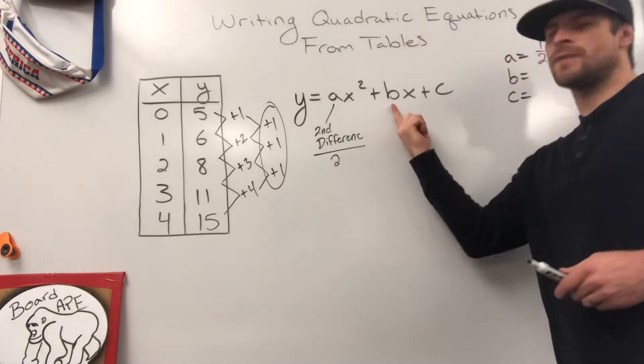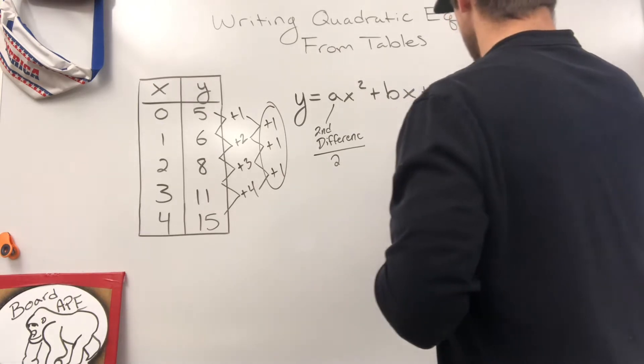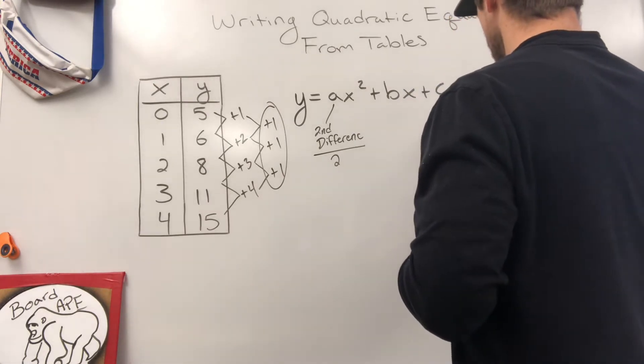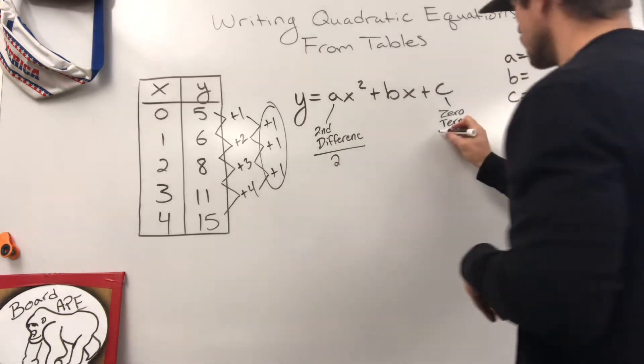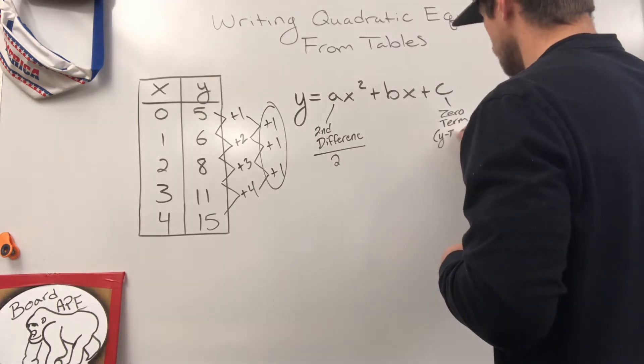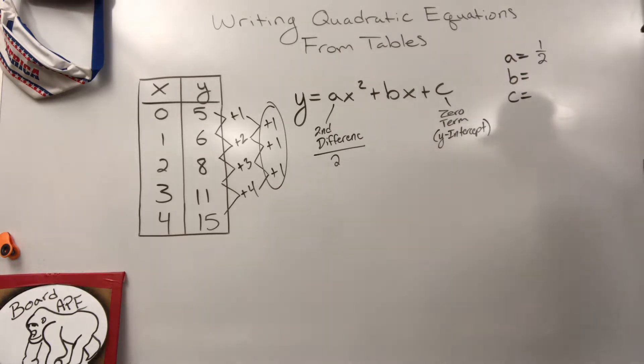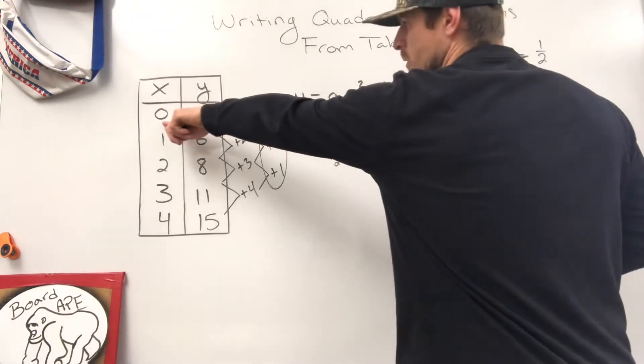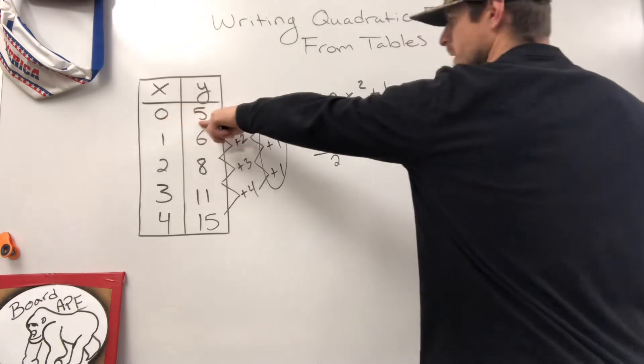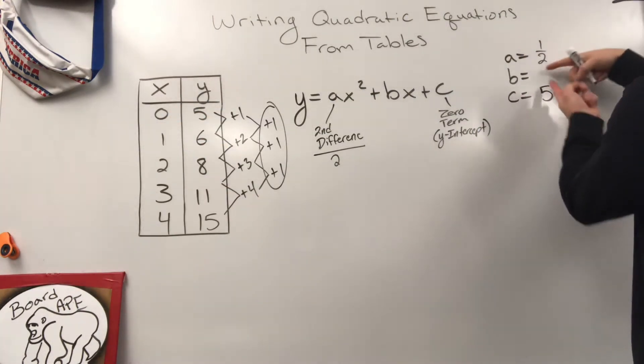B is what we'll find last. C, however, C is your zero term. When x is zero, where are you at? It's also known as the y-intercept. You probably know that from your linear equation unit back in algebra one or pre-algebra. So we have our starting point or our y-intercept. So we go to our table. Our zero term is five. That's our starting value. So C is five. I've got two of the three parts that I need.